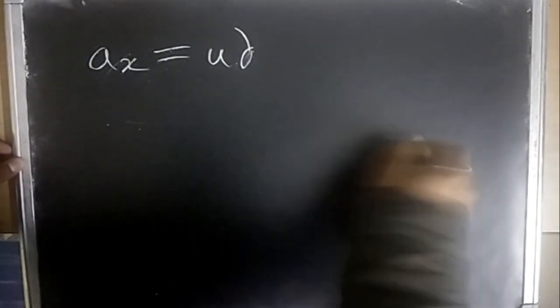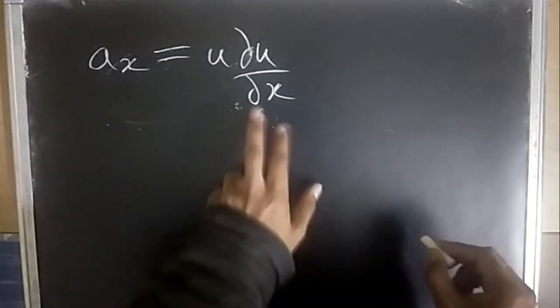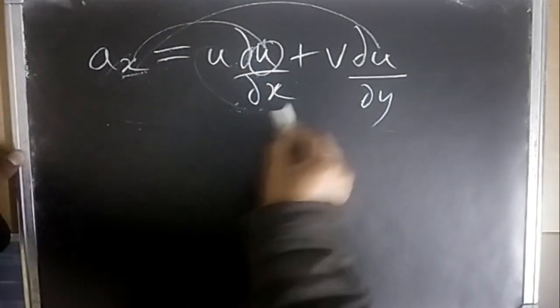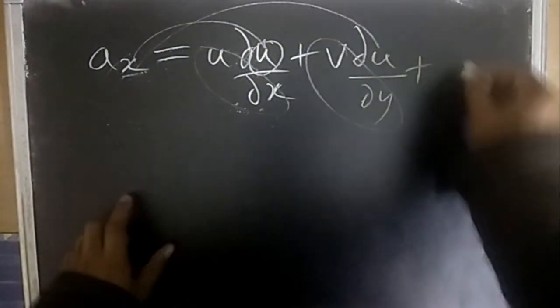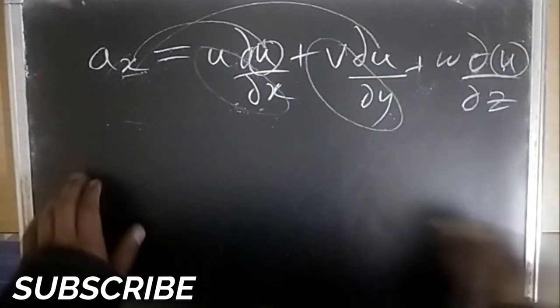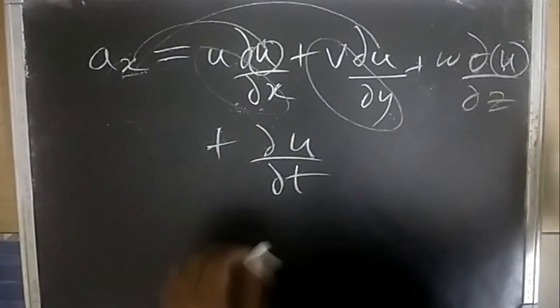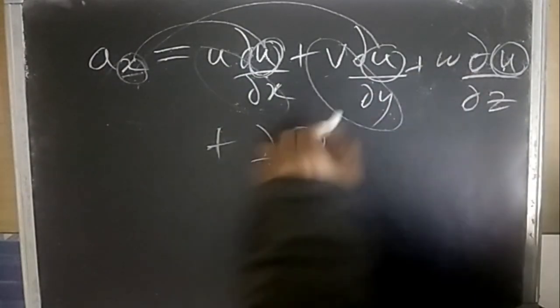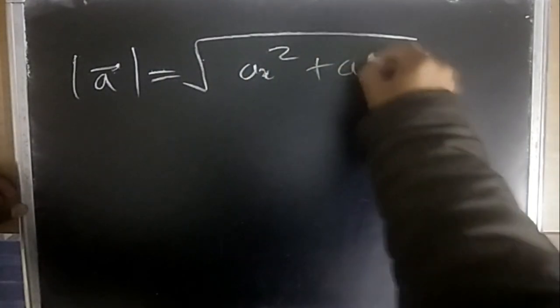The acceleration in the x-direction is: ax = u(∂u/∂x) + v(∂u/∂y) + w(∂u/∂z) + ∂u/∂t. So for the x-direction, we differentiate u with respect to all spatial directions and with time, multiplying by the respective velocity components. The net acceleration is √(ax² + ay² + az²).